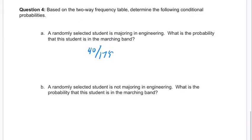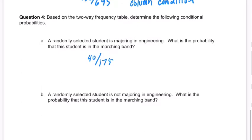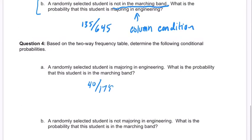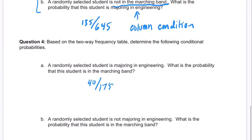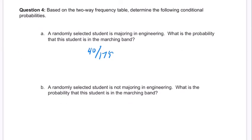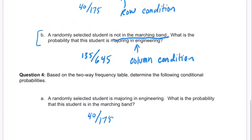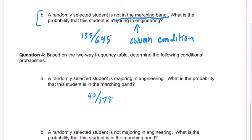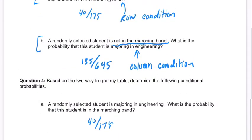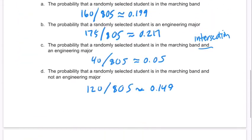And then: a random student is not majoring in engineering. This one's different. They're not majoring in engineering — what is the probability that this student is in the marching band?